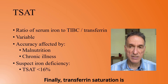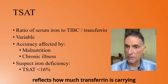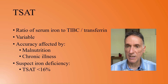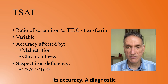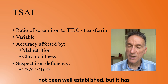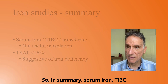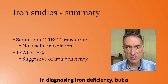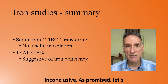Transferrin saturation is calculated as the ratio of serum iron to TIBC or transferrin. It reflects how much transferrin is carrying iron, but like serum iron it is variable — diurnal fluctuations can be up to 70%. Conditions like malnutrition and chronic illness also affect its accuracy. A diagnostic threshold has not been well established, but a value below 16% has been suggested as a screening threshold. In summary, serum iron, TIBC and transferrin should not be used alone in diagnosing iron deficiency, but a transferrin saturation below 16% can support the diagnosis if other tests are inconclusive.